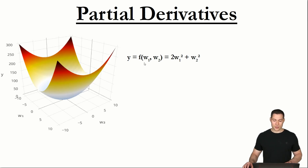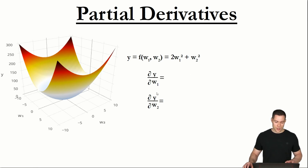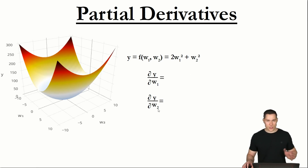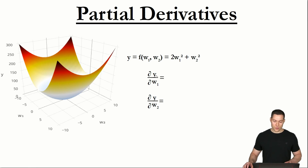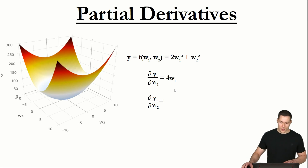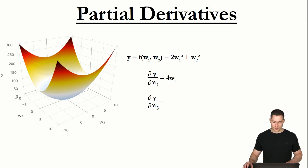Since we have those two variables, we have to determine two partial derivatives: the partial derivative of y with respect to weight 1, which tells us how y changes if we slightly increase weight 1, and the partial derivative of y with respect to weight 2, which tells us how y changes if we slightly increase weight 2. To determine the partial derivative with respect to weight 1, you simply treat weight 2 as a constant — bringing down the 2 in front of w and multiplying to get 4 times weight 1. For the partial derivative with respect to weight 2, you treat weight 1 as a constant.